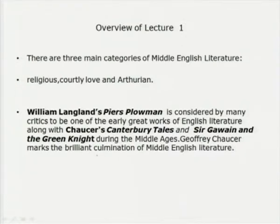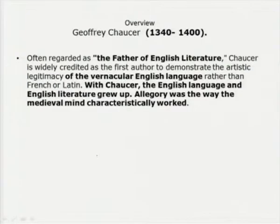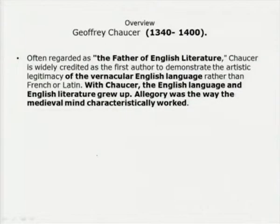Looking into the Middle English period from Lecture 1, we find that courtly love, Arthurian, and religious themes were explored. William Langland's Piers Plowman, and most significantly Chaucer's Canterbury Tales and Sir Gawain and the Green Knight are key works. The use of allegory, of style, and of English as a medium of language was first practiced here. Chaucer, from 1340 to 1400, is regarded as the father of English literature.